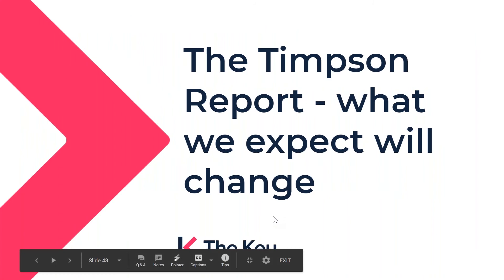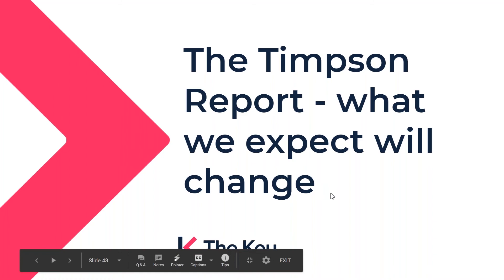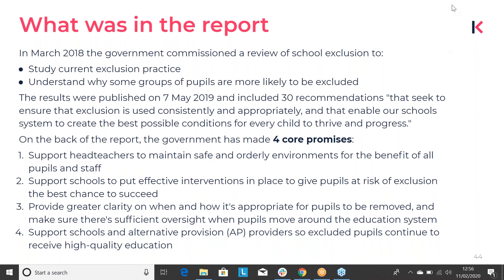In March 2018, the government commissioned a review of school exclusions called the Timpson Report, specifically to study current exclusion practice and understand why some groups of pupils are more likely to be excluded than others. As a result of that report, we expect to see some big changes. There were over 30 recommendations, and in response the government made four core promises: to support headteachers to maintain safe and orderly environments; to support schools to put effective interventions in place; to provide greater clarity on when and how removal is appropriate; and to support schools and alternative provision providers so excluded pupils continue to receive high-quality education.